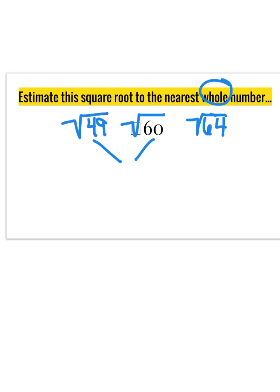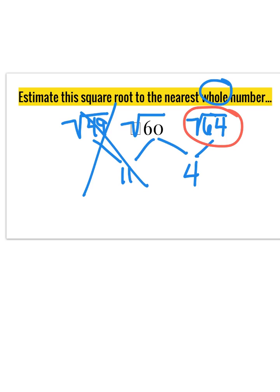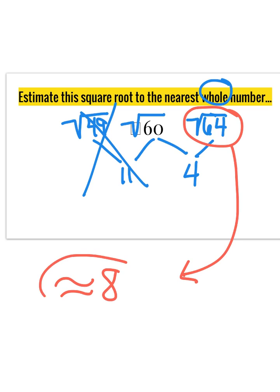49 and 60 are 11 spaces away from each other, but 60 to 64 are only 4 spaces away. So if I want my nearest whole number, I am not going to use the square root of 49. Instead, I'm going to use the square root of 64. So my estimate is going to be that the square root of 60 is closer to 8 as a whole number.